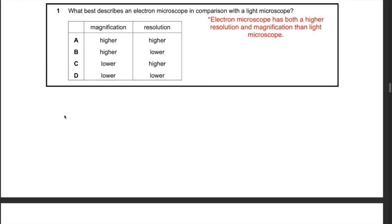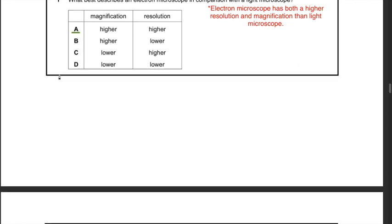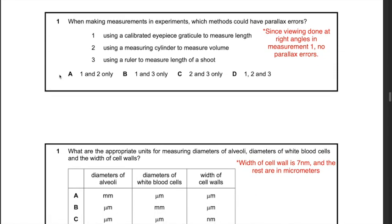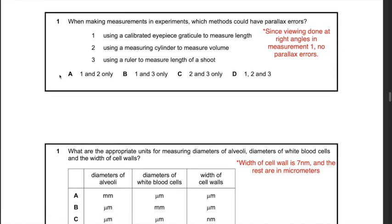Next question: what best describes an electron microscope in comparison with the light microscope? Remember, the electron microscope has both higher resolution and higher magnification than the light microscope. Looking at answers A, B, C, and D, the best answer is A — magnification is higher, resolution is higher.